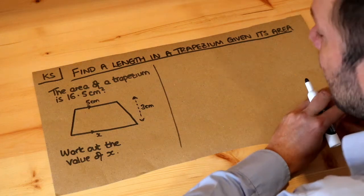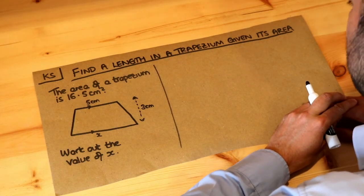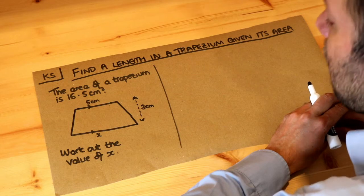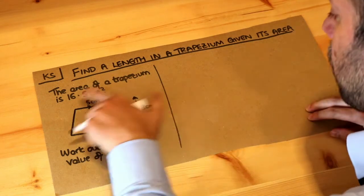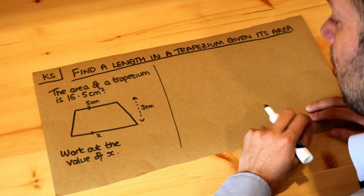Hello and welcome to this Dr. Ross-Mass key skill video on finding a length in a trapezium given its area. Remember that a trapezium is just a quadrilateral with one pair of parallel sides.